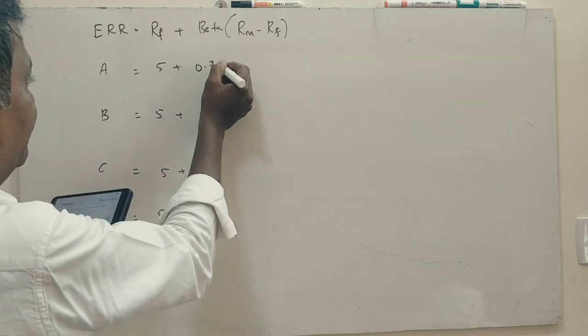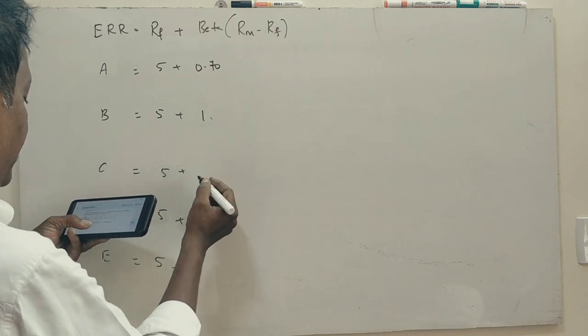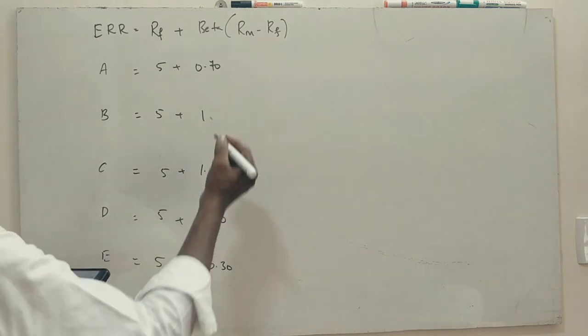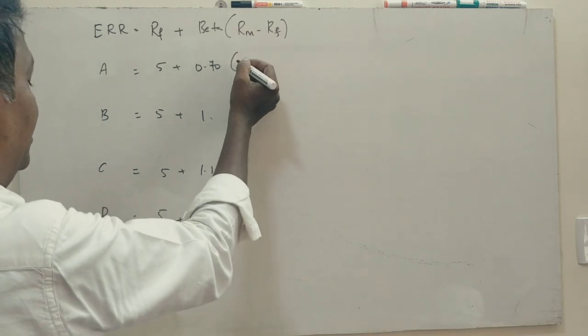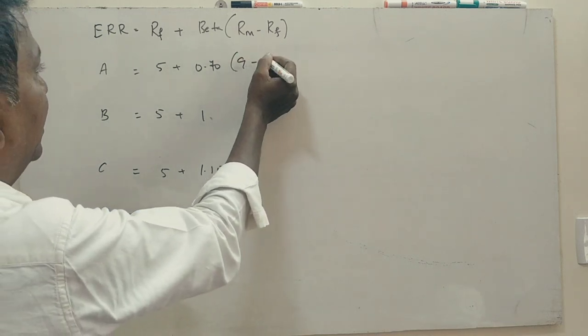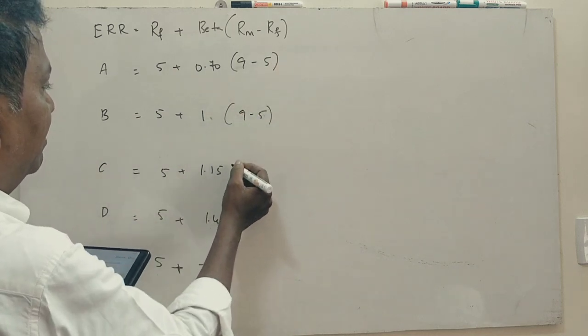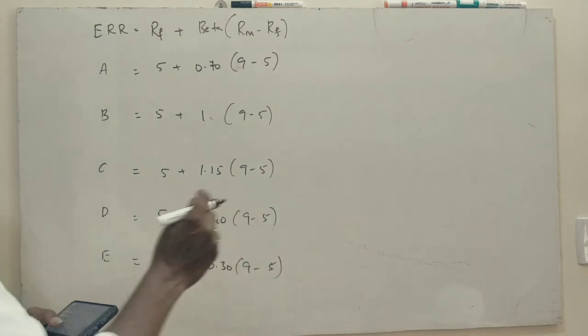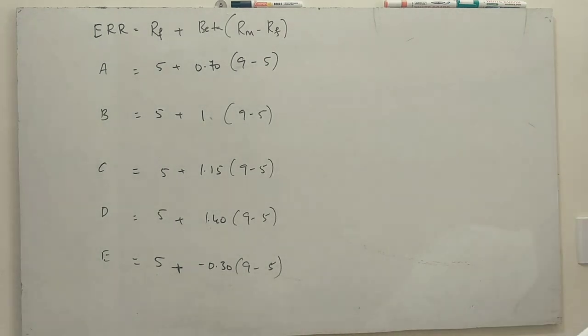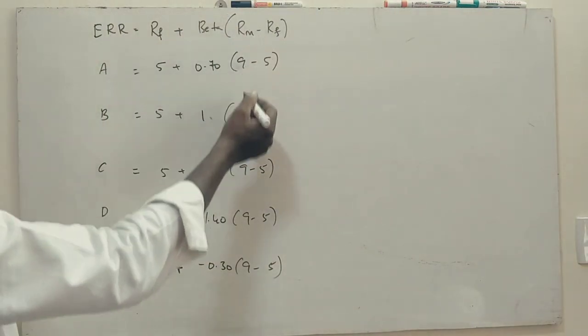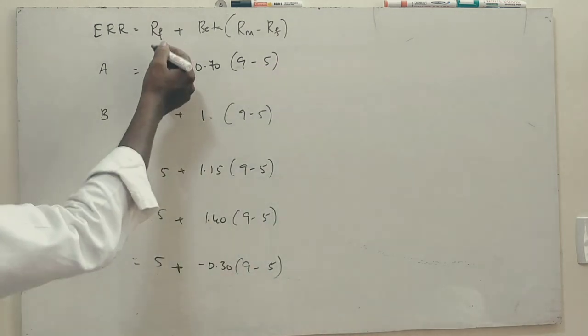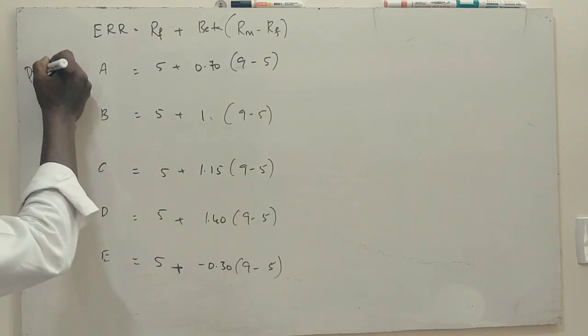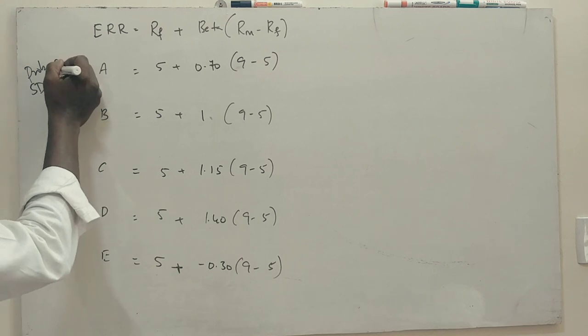So, 0.70, 1, 1.15, 1.40, minus 0.30. Risk-free return, market return is 9. This is 5. 9 minus 5. So, this is probability. Probability is equal to beta. So, probability and standard deviation are equal to beta.